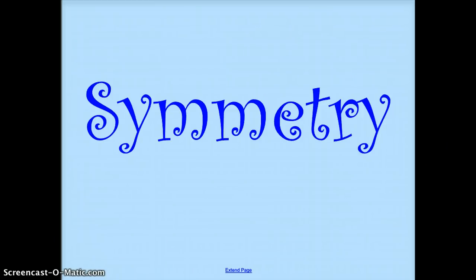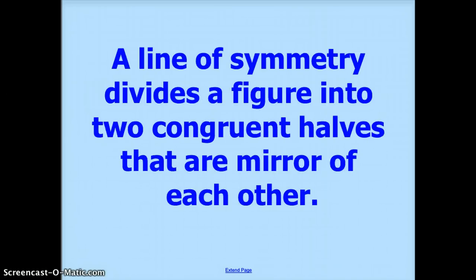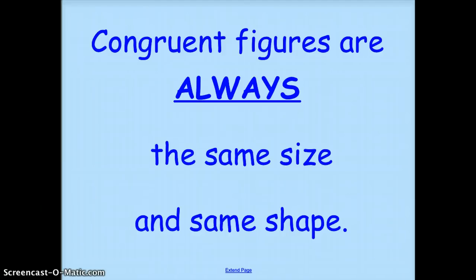Hello boys and girls. This week for your flipped video, we are going to be studying symmetry and different types of transformations. So we're going to start off with symmetry. A line of symmetry divides a figure into two congruent halves that are mirror images of each other. Congruent means exactly alike, so they're the same. Congruent figures are always the same size and the same shape.